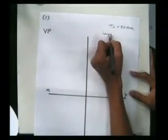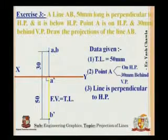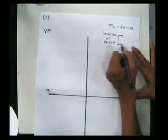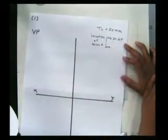And the second data is location of point A. Here, two locations are given. Okay.